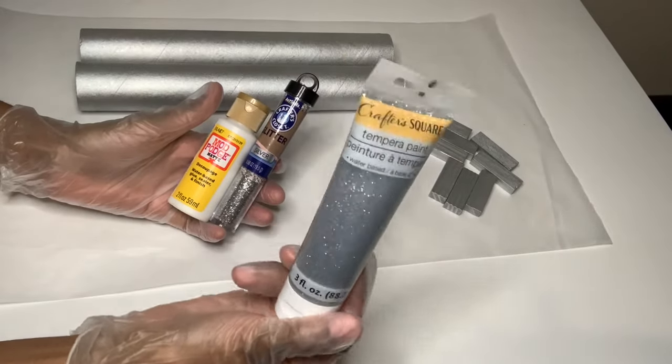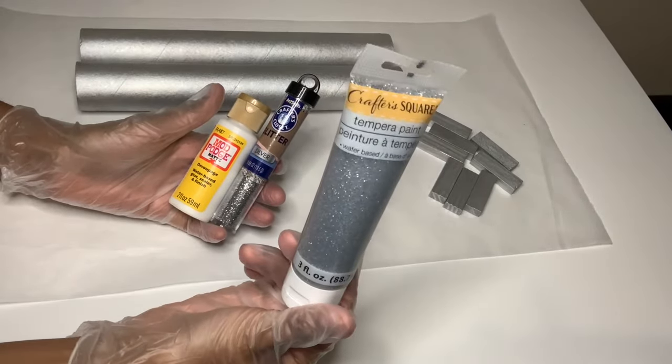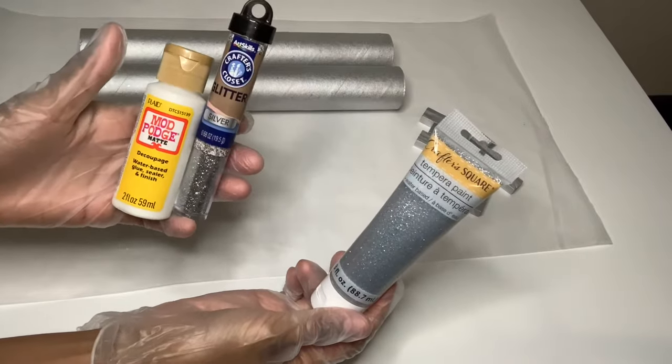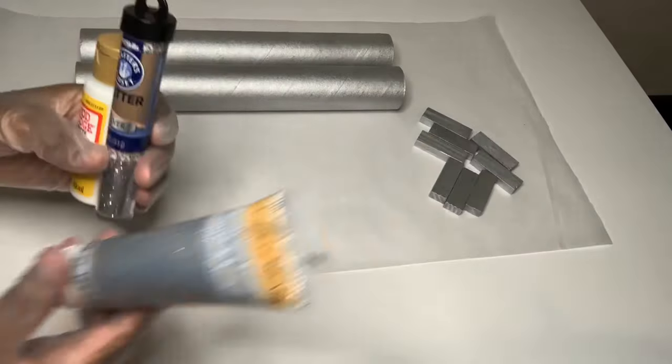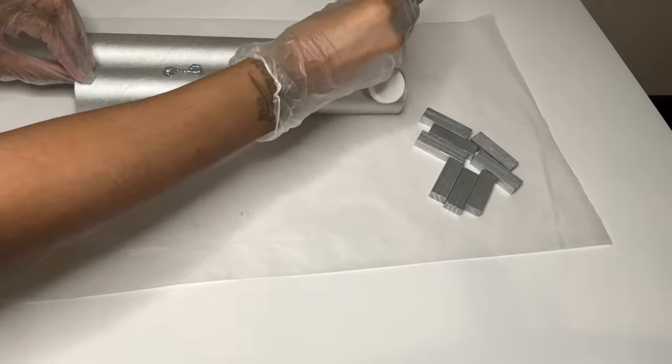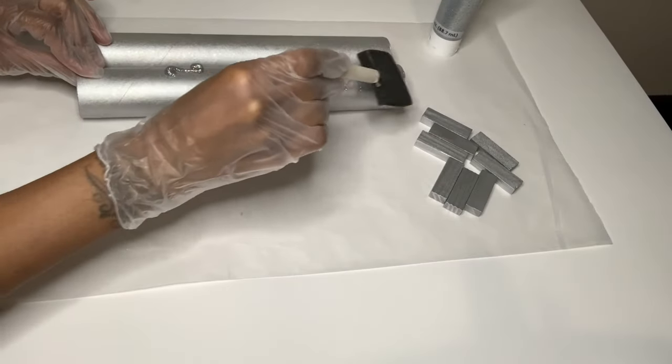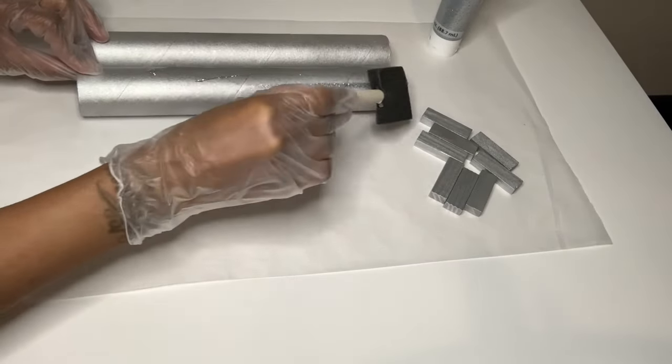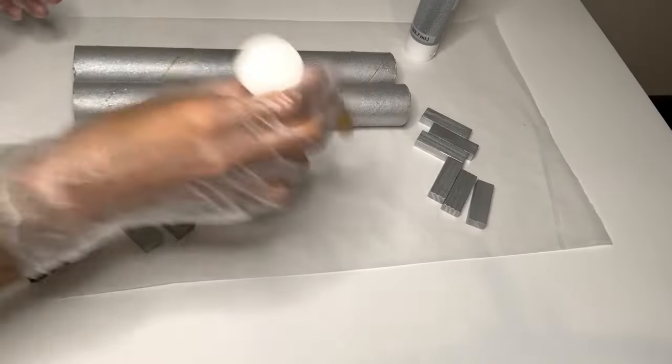Next I'm going to attempt to use only this Crafter's Square glitter paint to see how it looks, and if I don't like it then I'm going to use the Mod Podge with the silver glitter. So far it looks okay but I'm going to go ahead and use that Mod Podge and silver glitter mixture.